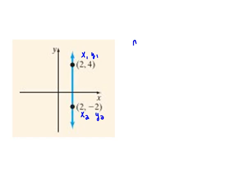and then we could find the slope so y2 would be negative 2 minus y1 would be 4 over x2 would be 2 minus x1 would be 2.